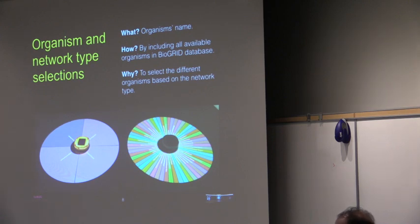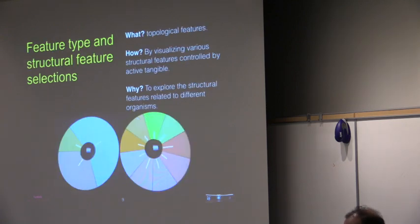And when an organism is selected, the user can select its network type from the menu shown on the left. And the networks are binary directed or binary undirected, weighted directed, or weighted undirected.